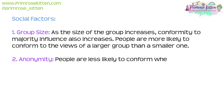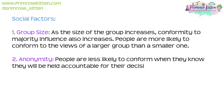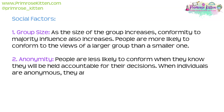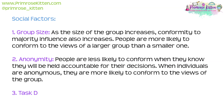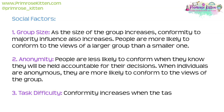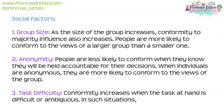The second social factor is anonymity. People are less likely to conform when they know they will be held accountable for their decisions. When individuals are anonymous, they are more likely to conform to the views of the group. Number three is task difficulty. Conformity increases when the task at hand is difficult or ambiguous. In such situations, people look to the group for guidance.